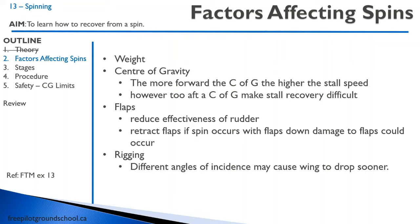He went and spun the aircraft with four people on board. He was within his normal weight and balance limits, but because he was doing a spin he was not within the utility category weight and balance limits. He entered his spin, and because he had an aft center of gravity the spin went flat — instead of being nose-down 45 degrees or so, it ended up level with the horizon. A flat spin is nearly impossible to recover from. Unfortunately, those four people lost their lives because that pilot could not recover from the flat spin. An aft center of gravity can make stall recovery very difficult, even in a docile airplane like the 172.